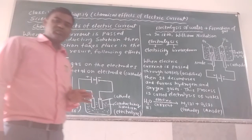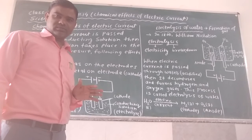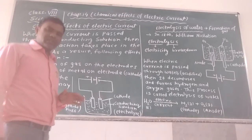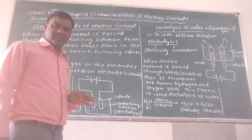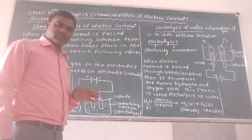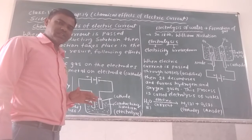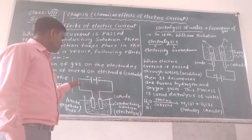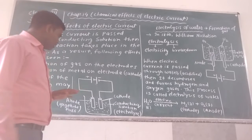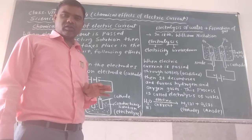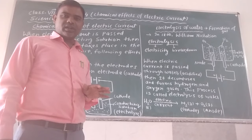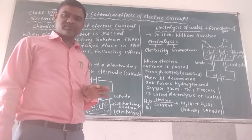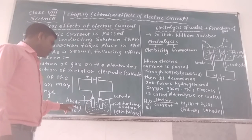Electrode means basically these are the carbon rods, graphite rods, or the metal rods. Carbon rods or graphite rods are good conductors of electricity. These are the carbon rods or graphite rods or metal rods which are connected with the positive and negative terminals of the battery. So electrode means the graphite rods or metal rods which are dipped partially into the solution and whose tops are connected with the terminals of the battery. There are two types of electrodes: anode and cathode.